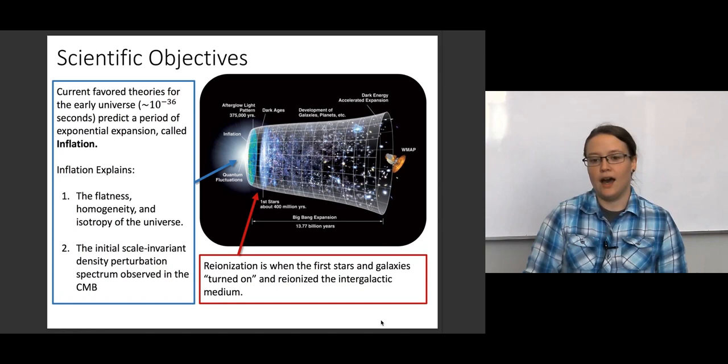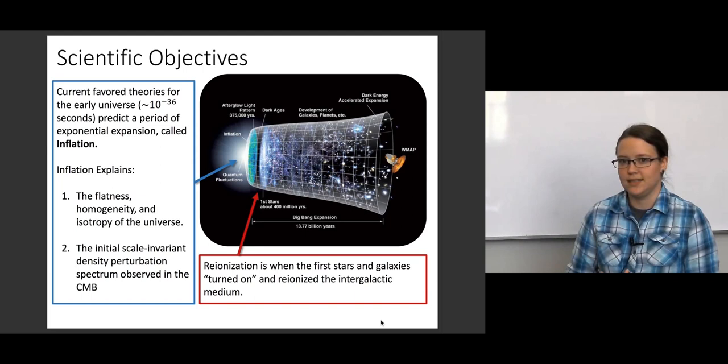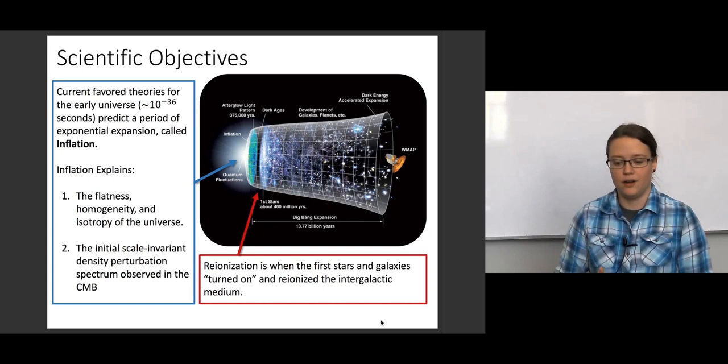It's a predicted era right now. We're looking for evidence that it occurred, but we like this type of expansion in the early universe because it explains a lot of things we see today. So we see a very flat and homogeneous universe, and these sorts of properties are explained by inflation. So we're really interested in finding out if this type of era occurred.